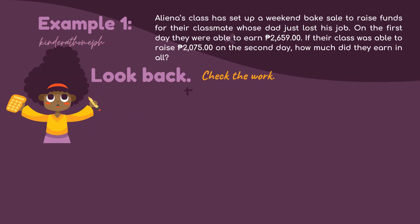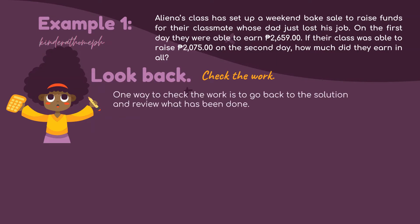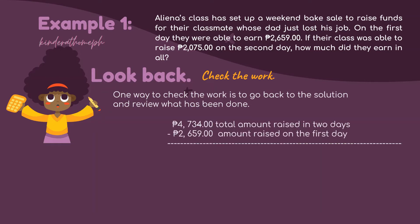Let us check our work. We need to do subtraction. Addition is when you combine things to make a larger thing — its symbol is a plus. Subtraction, on the other hand, is when you break things down to make a smaller thing — its symbol is a short bar. Since we are working with addition in this equation, to check the work we need to do the opposite, which is subtraction. Let us subtract the money raised on the first day from the total amount raised.